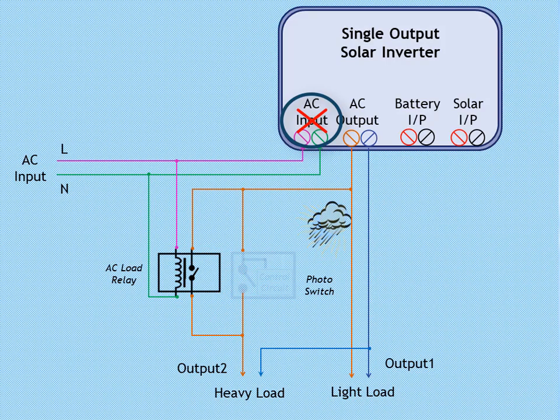While if weather is cloudy, then heavy load will be disconnected by this photo sensor switch. If running light load is greater than available solar power, then it will be operated by solar plus battery power.